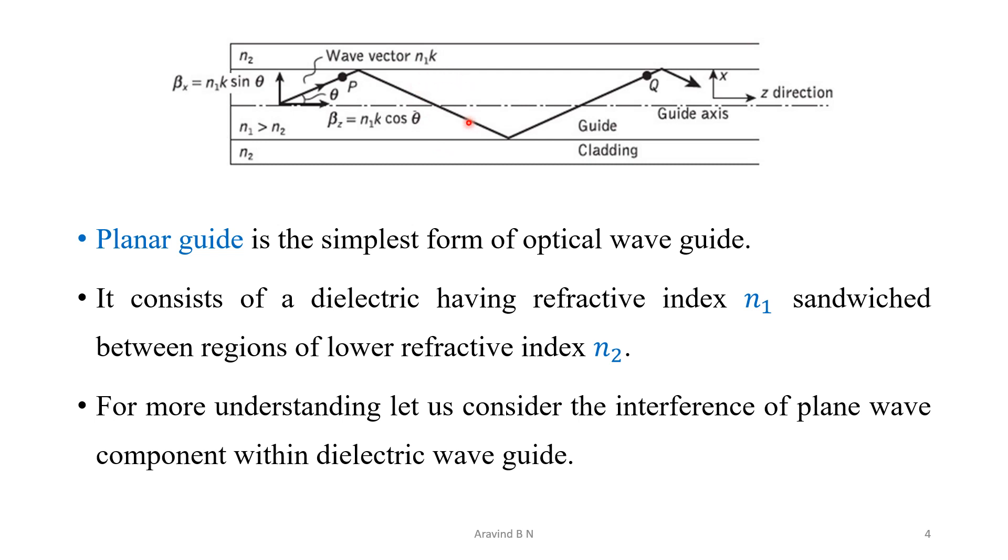The core region what is being represented, that is, with a refractive index n1, is referred as the term guide. And the middle of this guide is known as the guide axis and sandwiched between the region of n2. This n2 stands for the cladding.